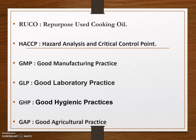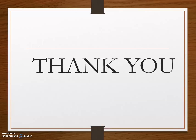Next is GHP — Good Hygienic Practices. Next is GAP — Good Agricultural Practice. Good Agricultural Practices are specific methods which, when applied to agriculture, create food for consumers or further processing that is safe and wholesome. GMP, GLP, GHP, and GAP are the basic building blocks of HACCP.